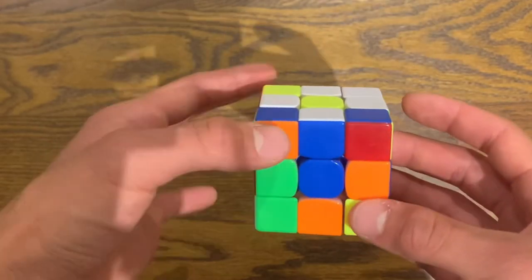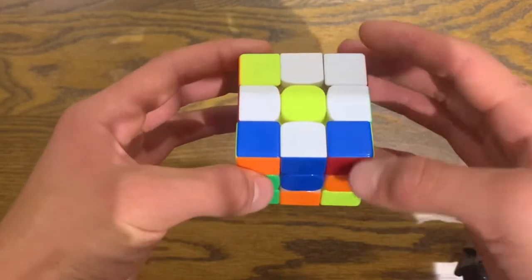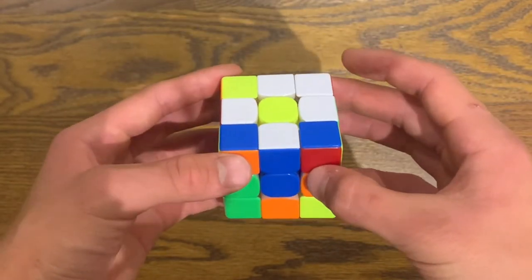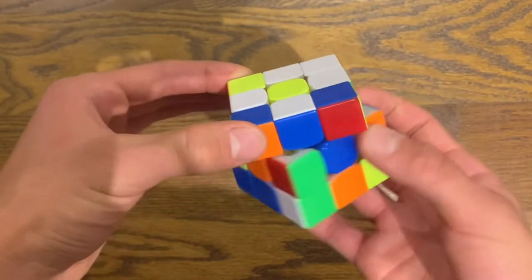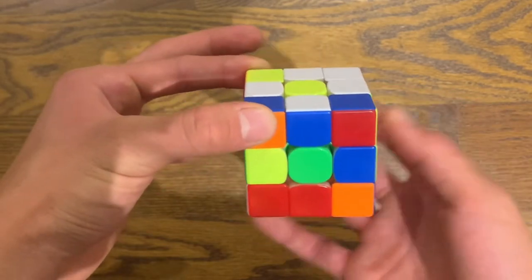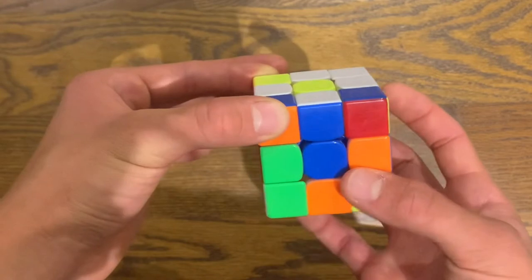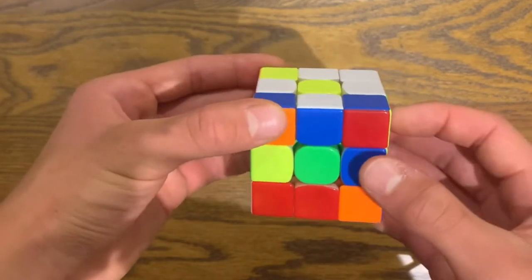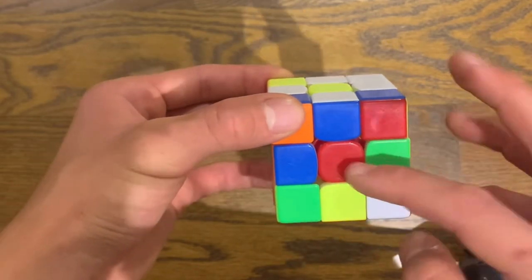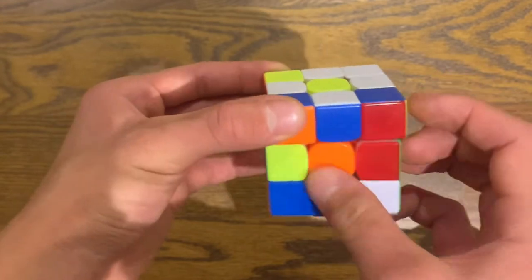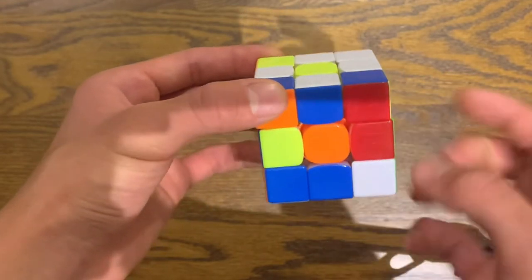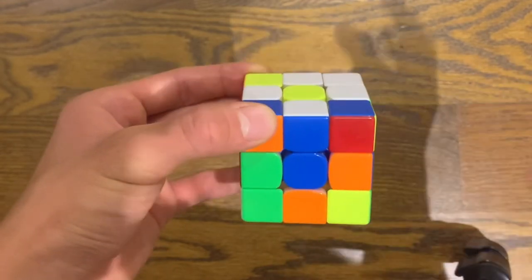This is fairly simple. We keep our white daisy on top, always on top. Then we rotate the bottom two layers of our cube. We just move these around. You can move it this way, this way, it doesn't matter. But once you see a color, a centerpiece that matches correctly with your white edge piece, then you're ready to move on.